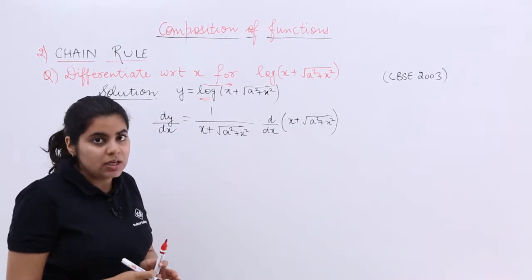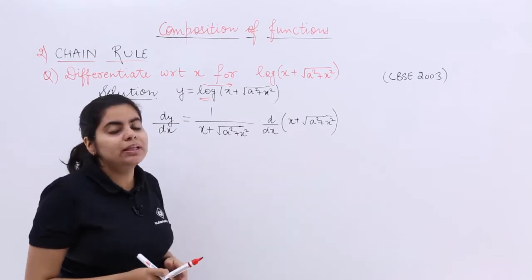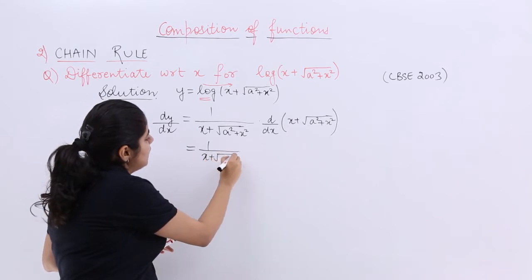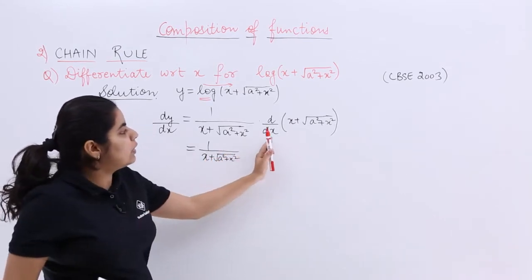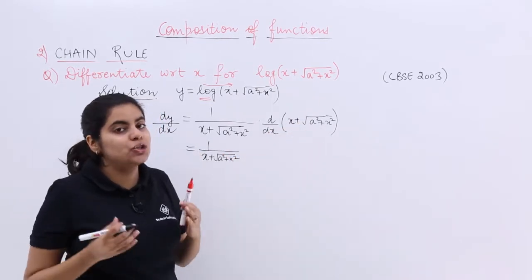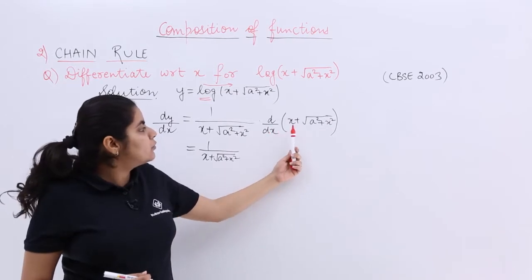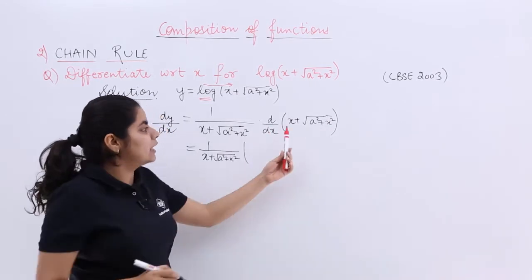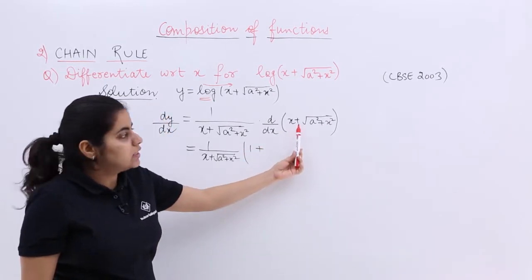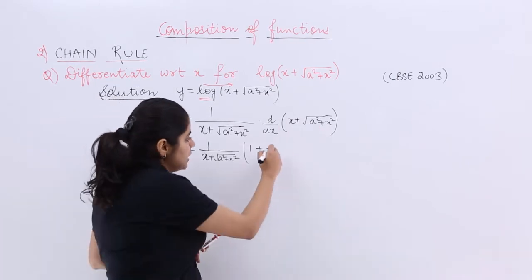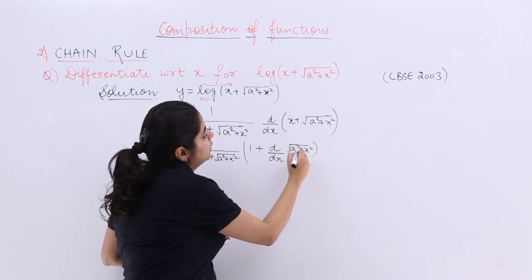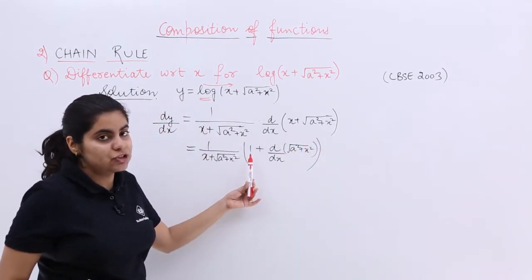Since this is the first question, we are taking only one differentiation at a time. We already handled log; now we handle the bracket. Copy the previous part as it is, then differentiate the bracket. The bracket contains x + √(a² + x²). The differentiation of x is 1, plus the differentiation of the root term.